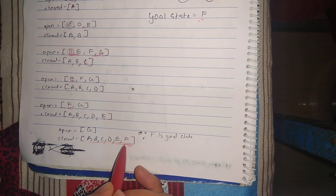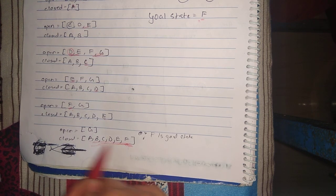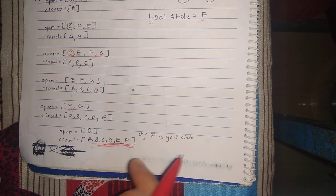So we'll take F and put it in the closed state, and this is the path that we got to reach the goal state.